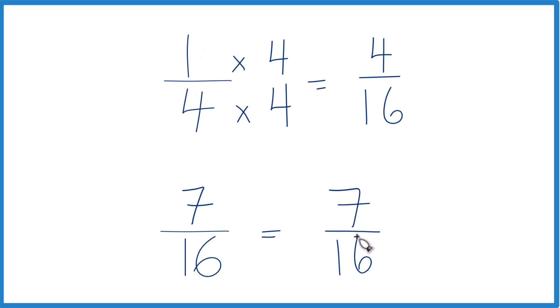Now, since the denominator is the same, we can compare the numerators. And you can see that 7, that's greater than 4. So 7 sixteenths, that's greater than 4 sixteenths.